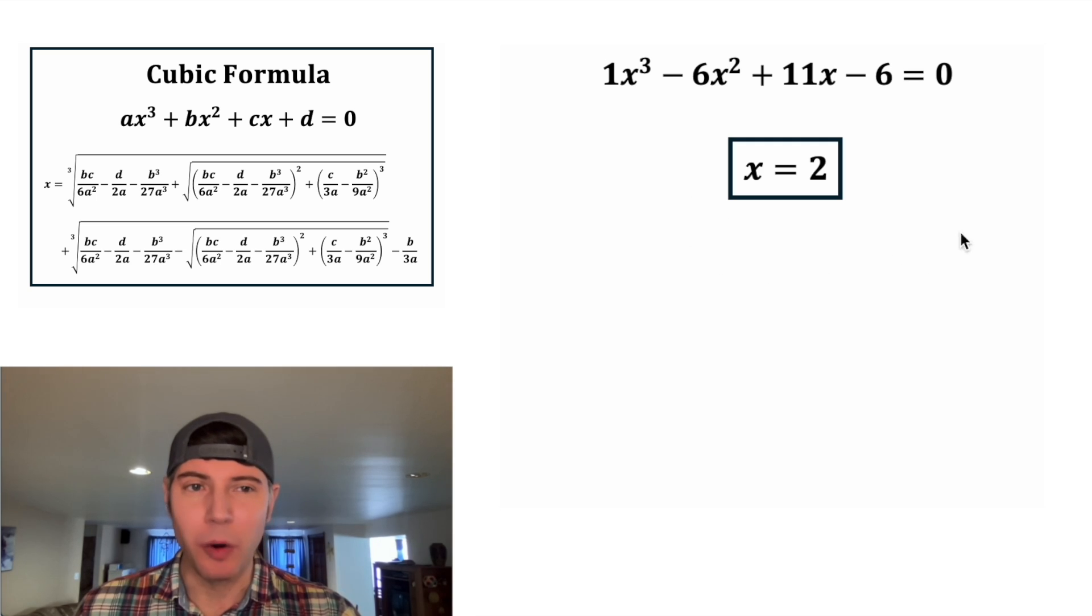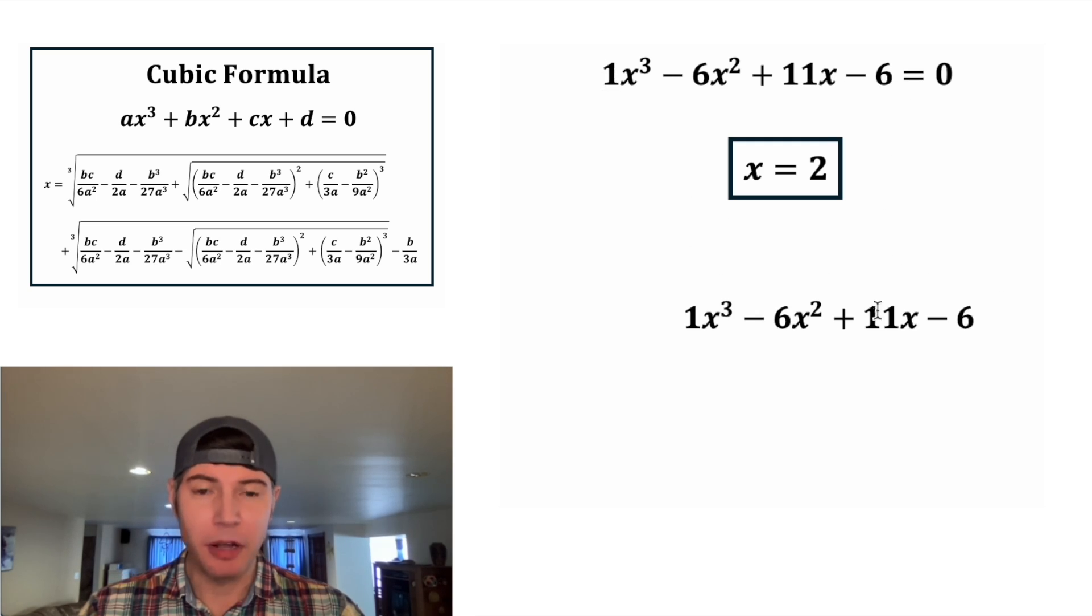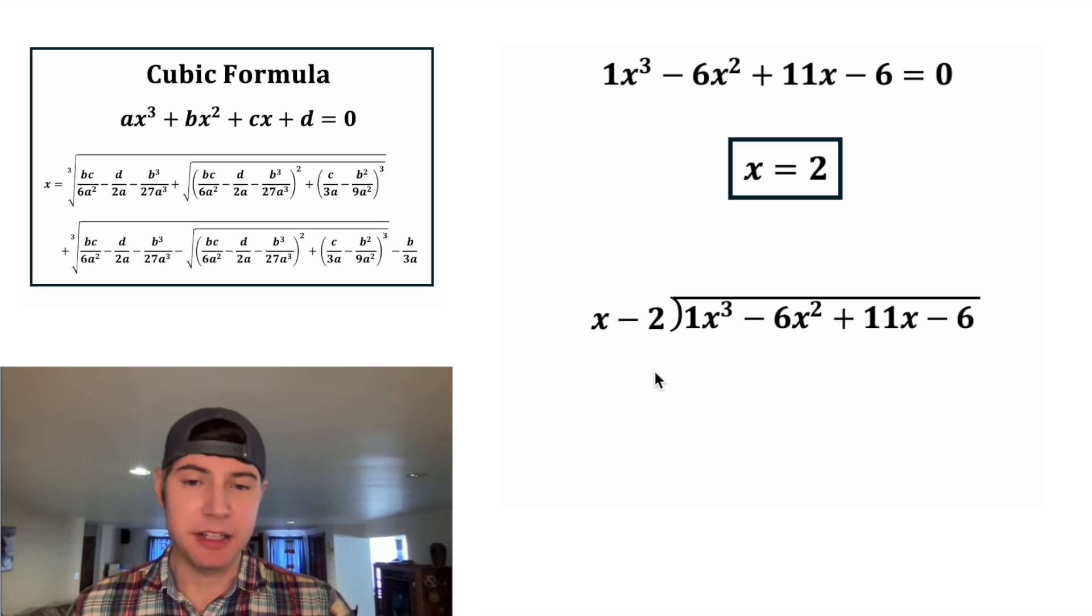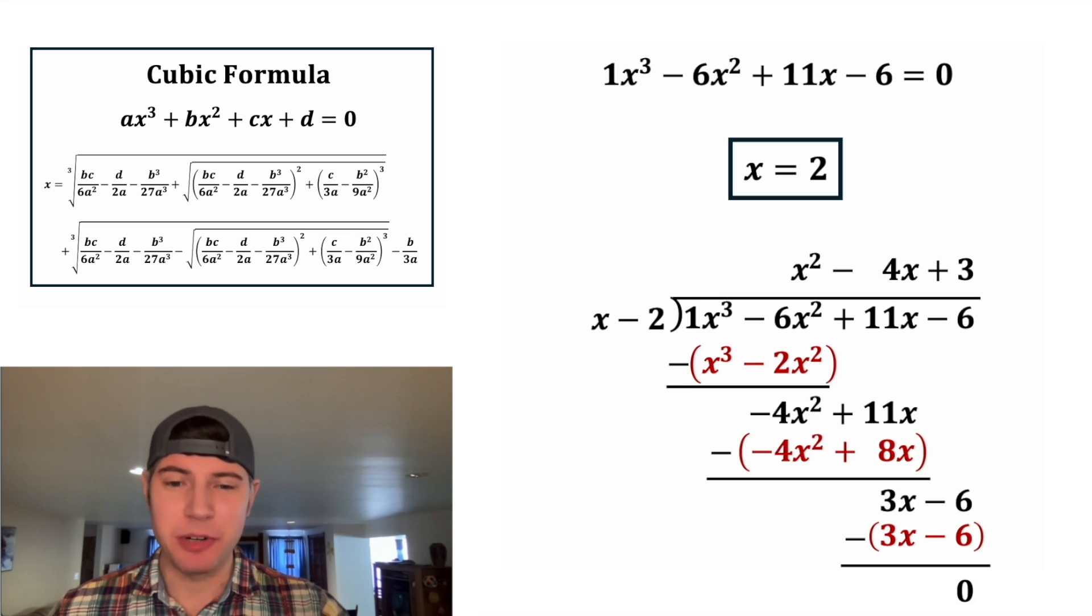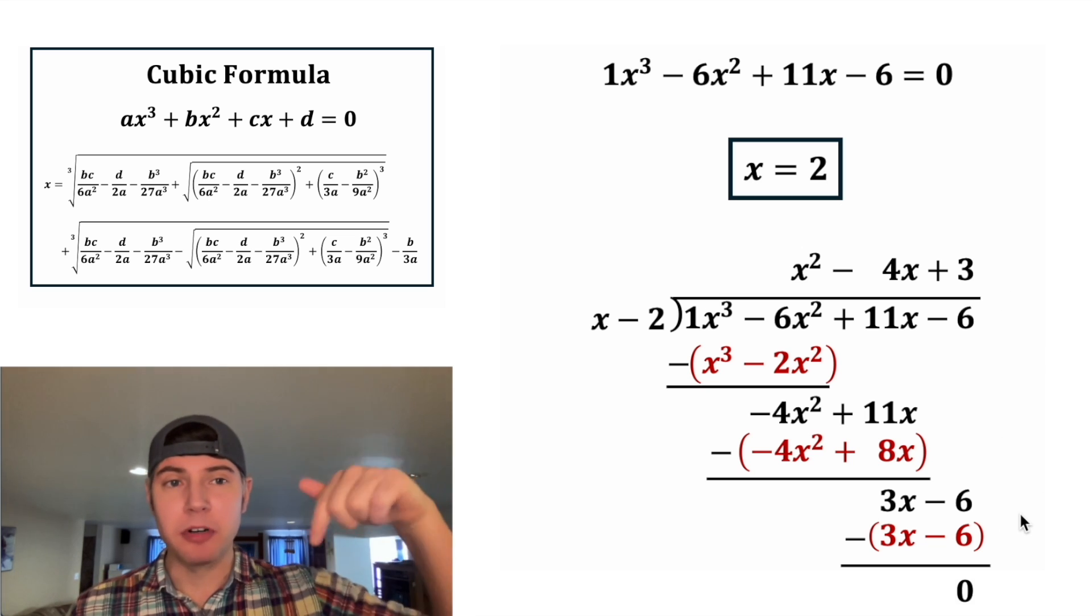And while we're at it, let's find the 1 and the 3. We're going to copy down our polynomial. And then we're going to divide by x minus 2. Since x minus 2 is the corresponding factor for the solution x equals 2. I'm not going to go through all the steps right now. But this is what the polynomial long division would look like. If you want to see a video on just polynomial long division, I'll put a link in the description.